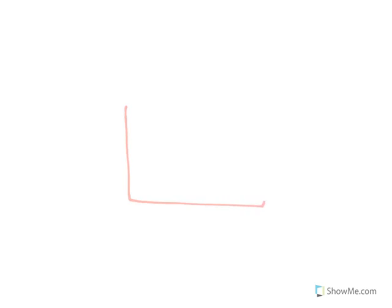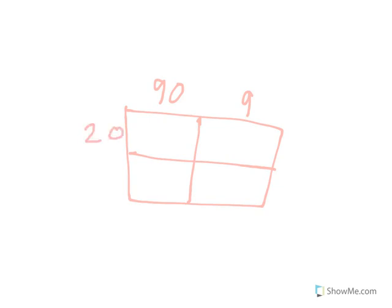Okay, so first you make a box and then split it into four pieces. And let's say you're doing 99. So you would split it up, I mean, not divide it, but I mean times 22. And you'd split that up. Oh, I got you. So the tens digit and the ones digit? Yeah. Okay.